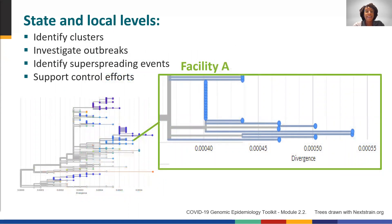At the state and local levels, genomic data can provide a more granular picture of ongoing transmission to support control efforts — for example, by detecting clusters, investigating outbreaks, and identifying superspreading events.